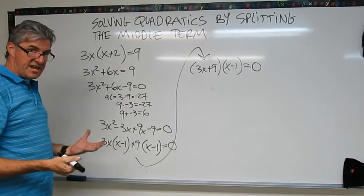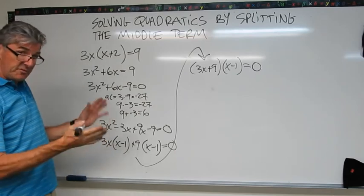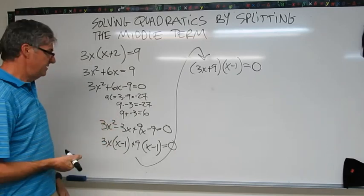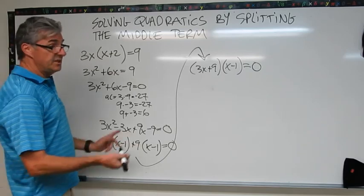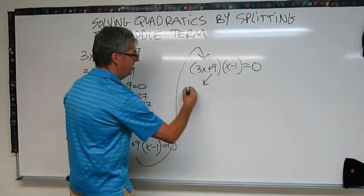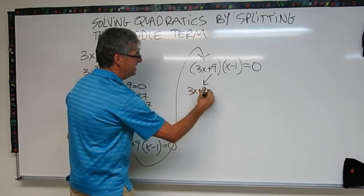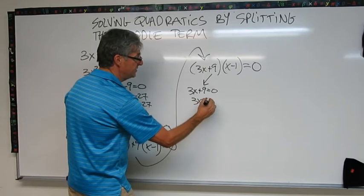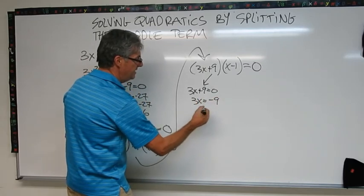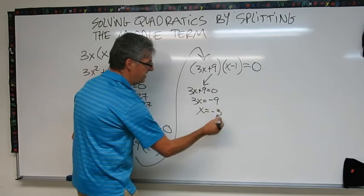Gosh, I seem to forget that every time. I catch it. So if I was on a test or a quiz, I'd be fine. Better not to. Better to do it right the first time. So let's do our split. 3x plus 9 equals 0. Subtract 9 from both sides. 3x equals negative 9. Divide by 3. x equals negative 3. So there's one solution.